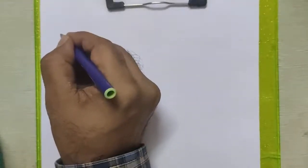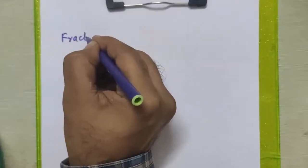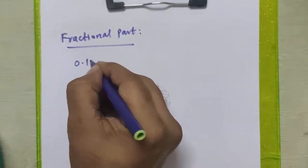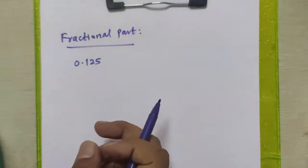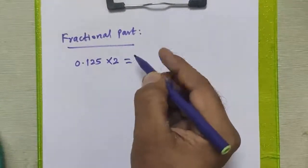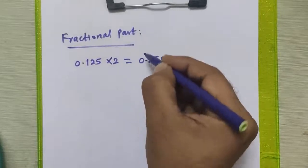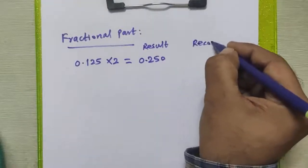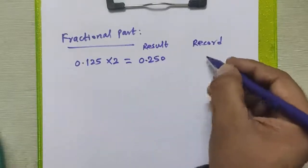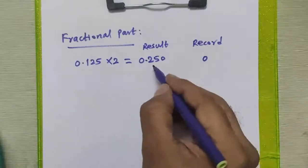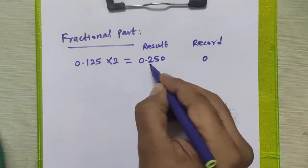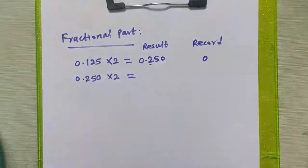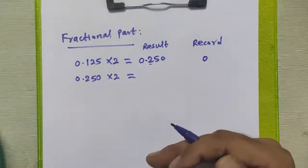Now we will apply a different procedure to convert the fractional part decimal number to binary. The fractional part given in the number was 0.125. For the fractional part, we multiply the given fractional part by 2 and get the result. This process continues till your fractional part becomes 0, or we solve up to 3 decimal places.